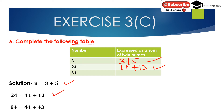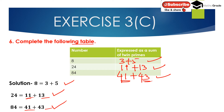For 84: 84 is the sum of 41 and 43. Both 41 and 43 are prime numbers. So 84 = 41 + 43, 24 = 11 + 13, and 8 = 3 + 5.